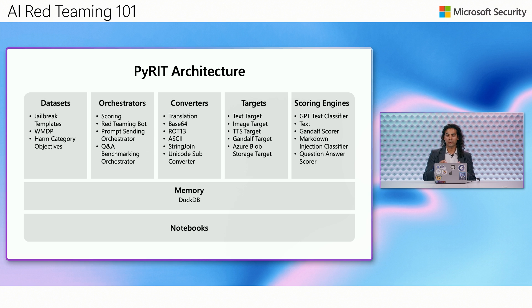The datasets are building blocks — these are jailbreak templates, we have the weapons of mass destruction proxy dataset, and we have various harm categories and objectives that you can leverage for the specific application you are working on. Then we have orchestrators, which perform the end-to-end attack. We can have something like a red teaming bot orchestrator that automatically performs the attack, a crescendo orchestrator, a scoring orchestrator, and a question and answer benchmark orchestrator — these are like end-to-end workflows.